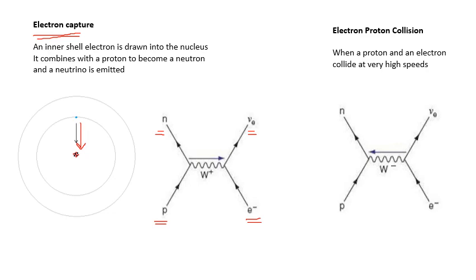This is an electron-proton collision — when a proton and an electron collide at very high speeds. Again starting with a proton and electron, but notice the difference: here it's a W minus boson going that way, compared to the W plus boson in electron capture. The end products are the same though: a neutron and a neutrino. You should recognise these diagrams — and strictly speaking you should be able to draw them, so you've got some learning to do.